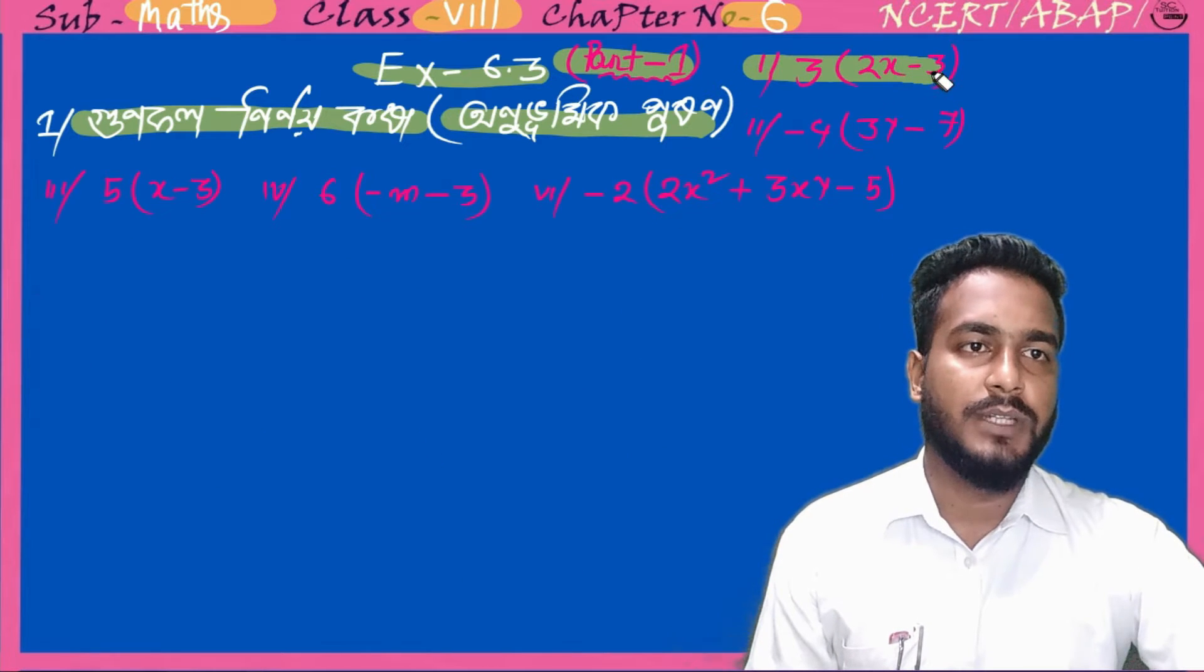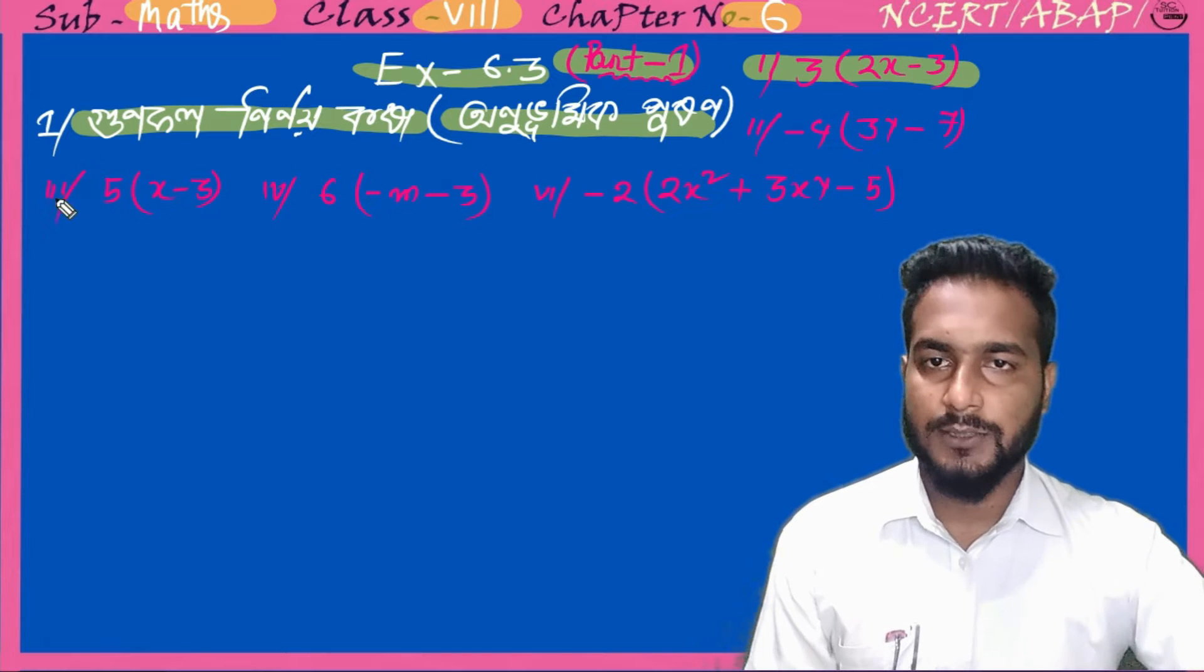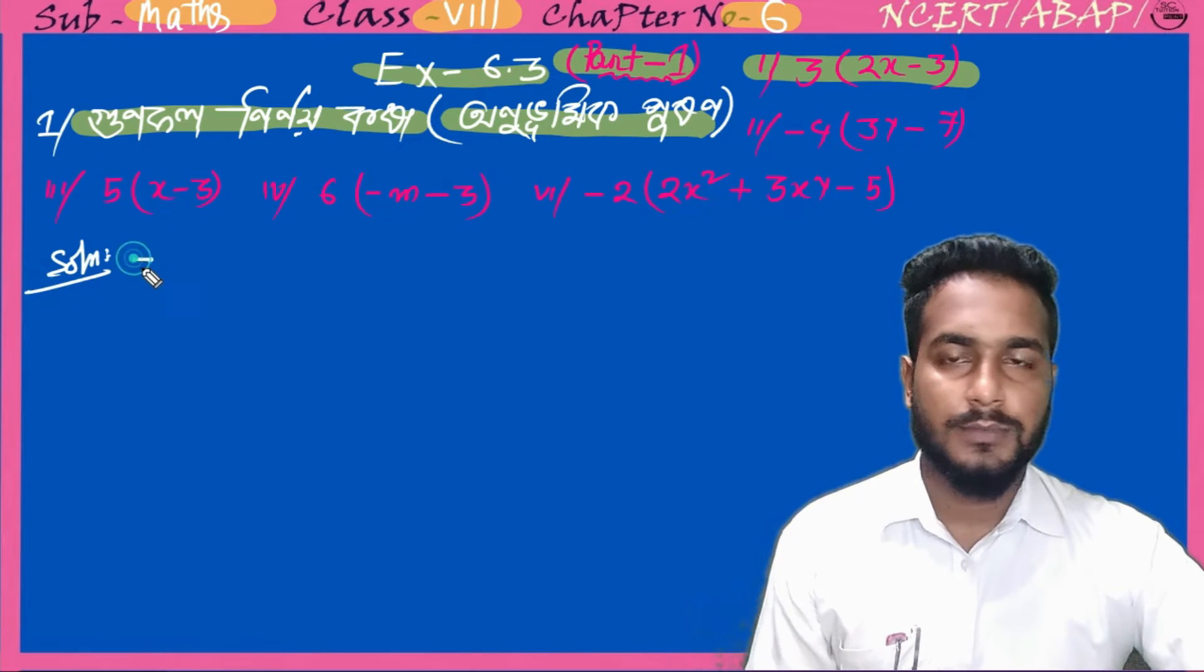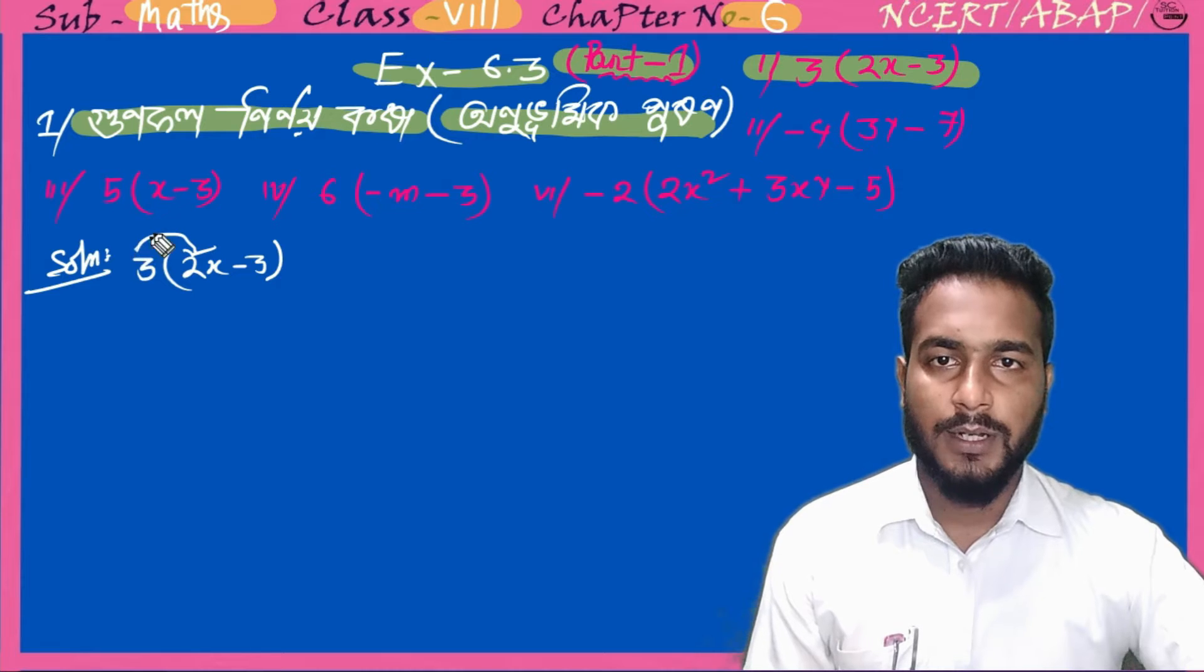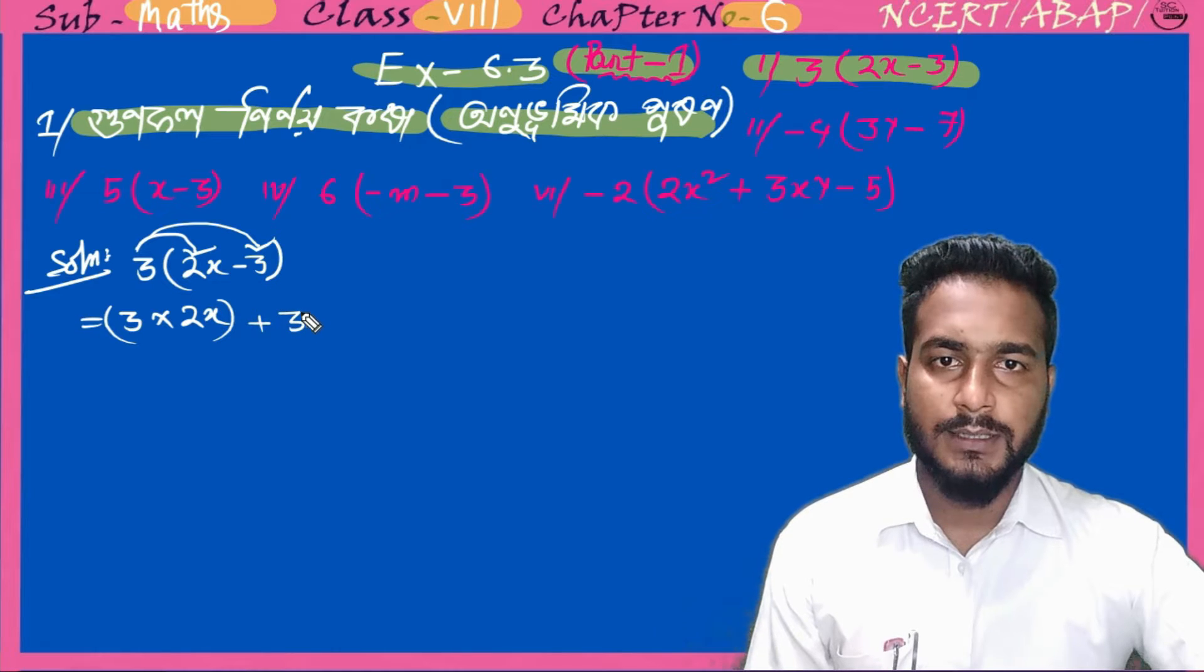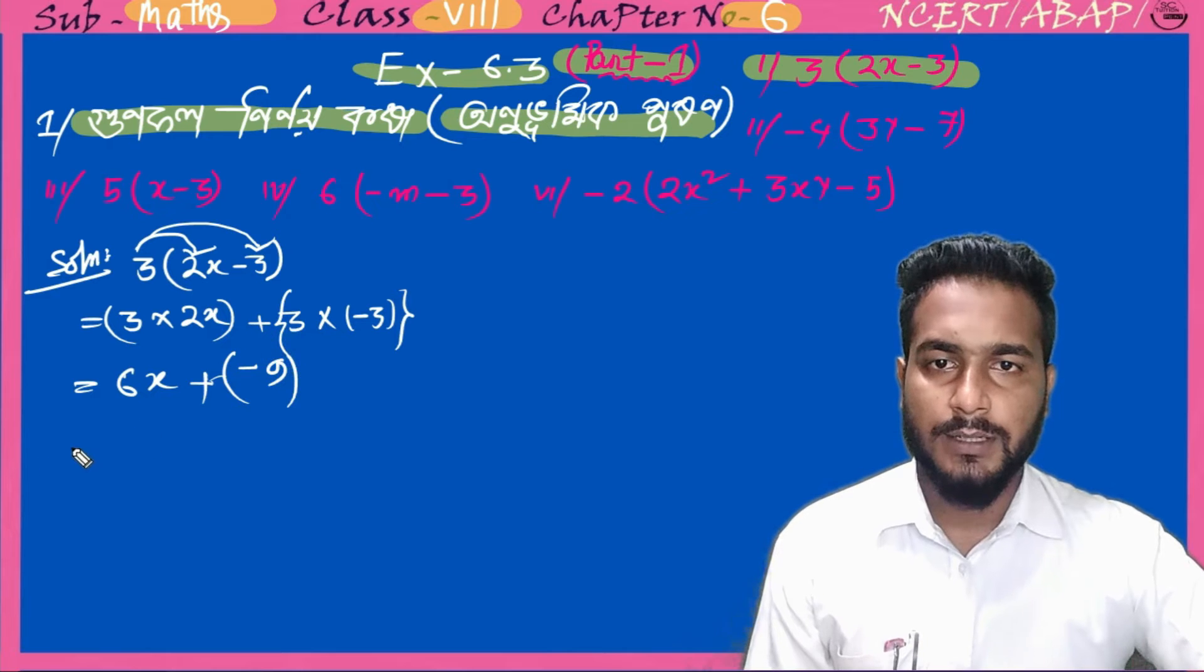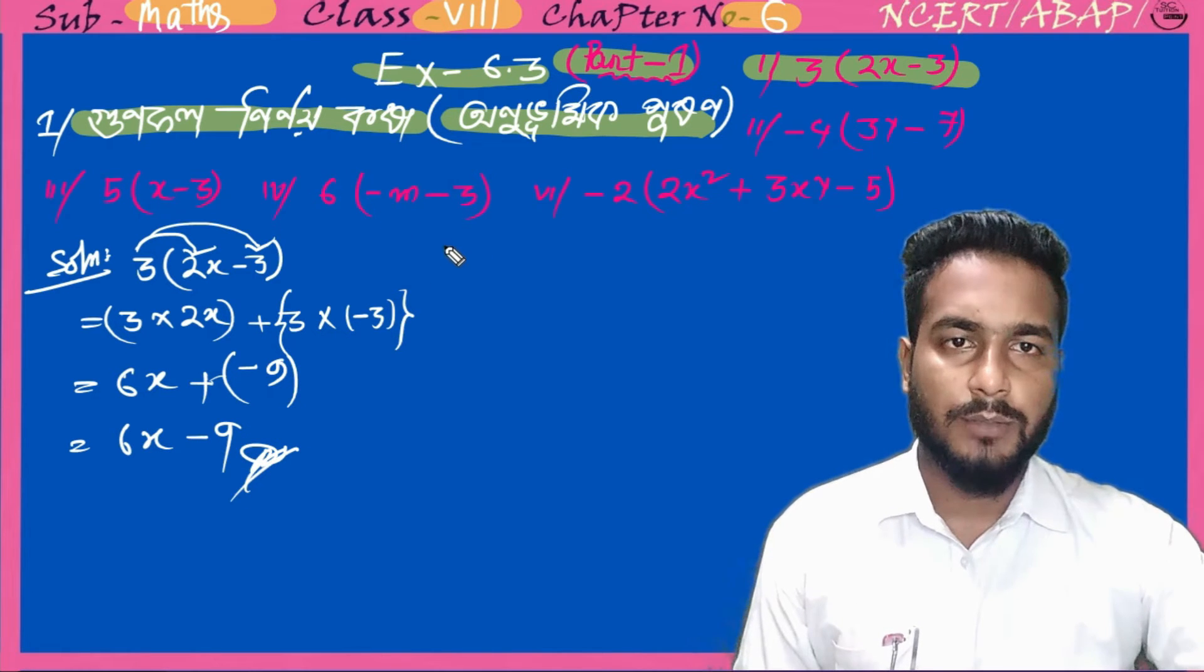This is the first question: 3 into 2x minus 3. So we have 3 into 2x. If we multiply, 3 into 2x equals 6x, plus 3 into minus 3 equals minus 9. So it equals 6x plus minus 9, which equals 6x minus 9. So this is the answer, this is the solution.